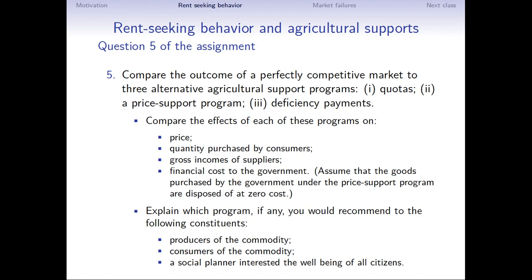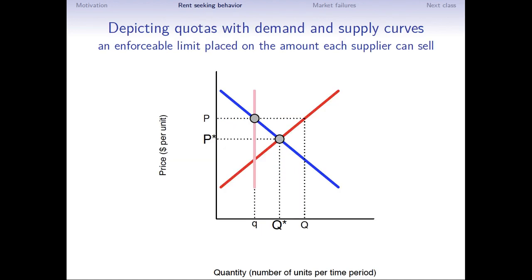So here is the question. We're going to examine three different types of programs, quotas, price supports and deficiency payments. And you're asked to do a comparative statics exercise and compare the outcomes before and after the program is introduced. So let's start with quotas, which are an enforceable limit on how much can be sold or supplied in the market. And that limit is expressed by a perfectly inelastic supply curve.